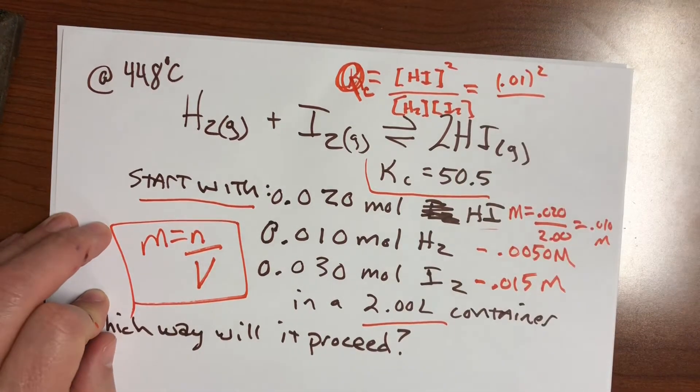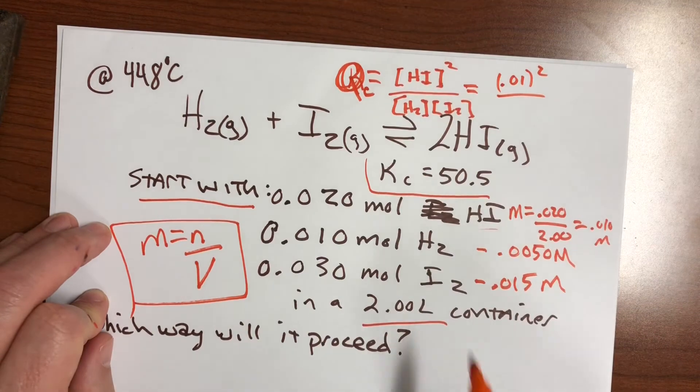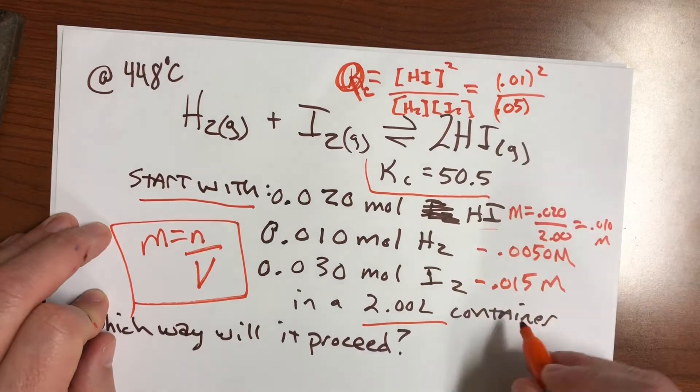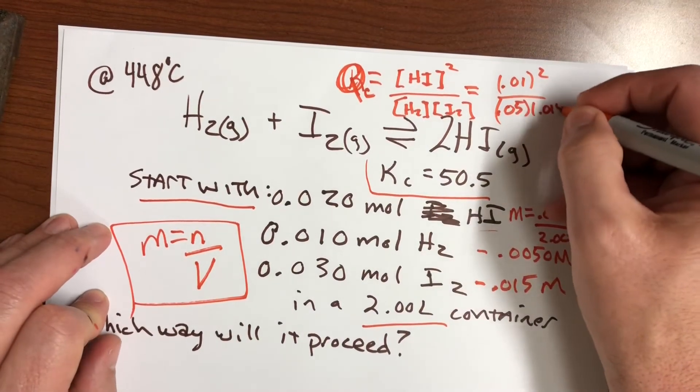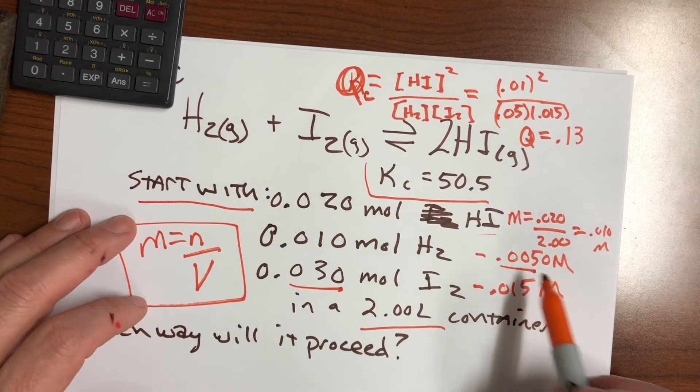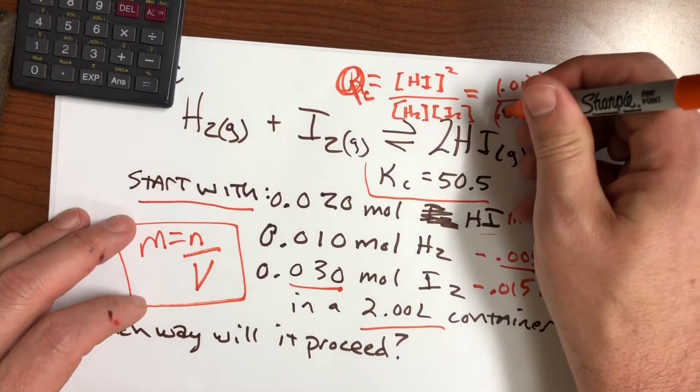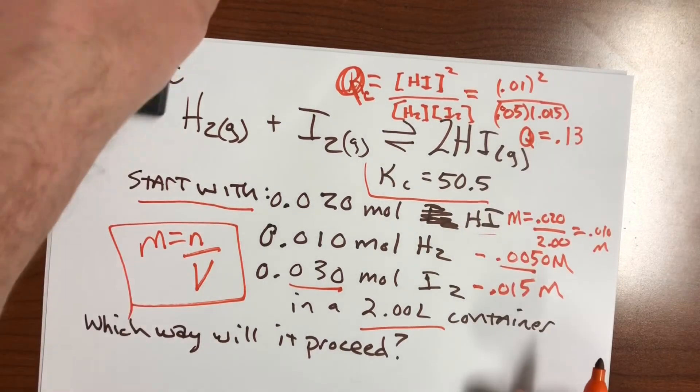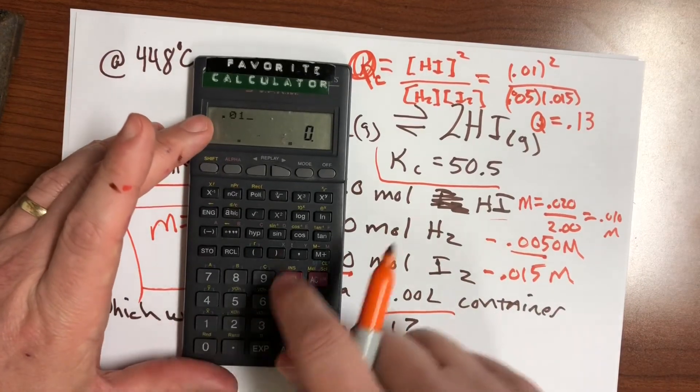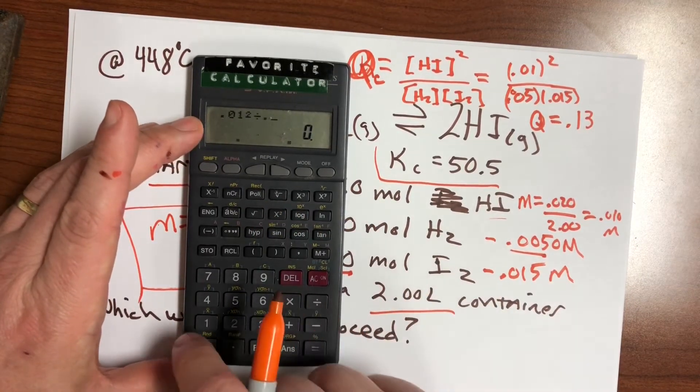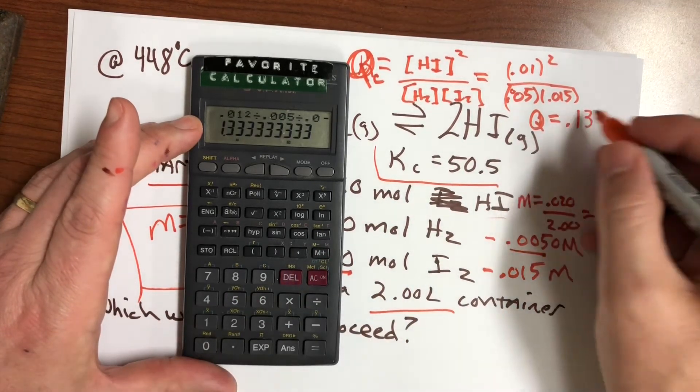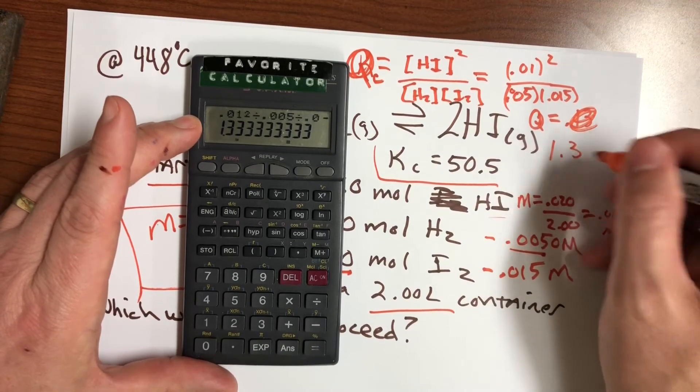So HI, that's our first number here, it's 0.01. I'm not going to worry about sig figs for now. And then I'm going to square that, and then on the bottom we're going to take 0.05 and we're going to take 0.015, and of course there's my mistake. I had two zeros before the five here, so that should be 0.005 there. So let's go ahead and plug those correct numbers in. We've got 0.01 squared divided by 0.005 divided by 0.015, and we get a Q value of 1.3.